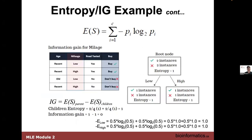We do the same calculation for mileage. For both low and high mileage, the entropy of children is one in each case. Taking entropy of the parent (one) minus the weighted average entropy for low and high mileage gives one minus one, so the information gain for mileage is zero. There's no information in mileage for deciding whether to buy or not buy a car, whereas age gave a score of 0.3112.